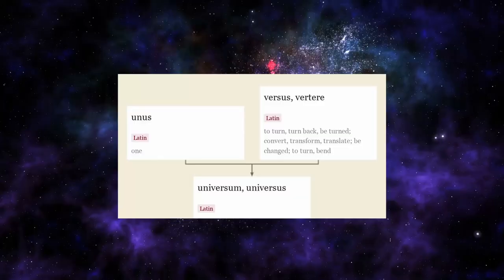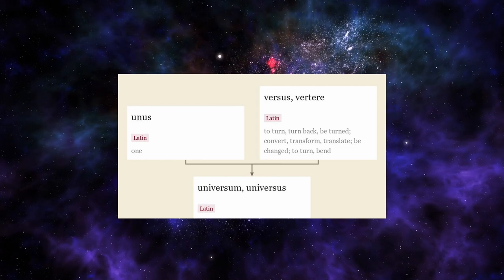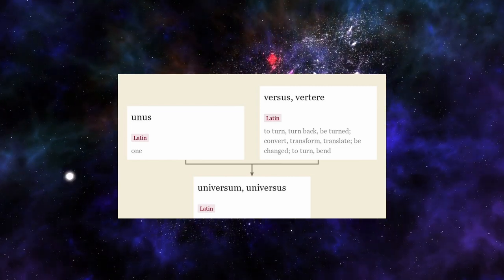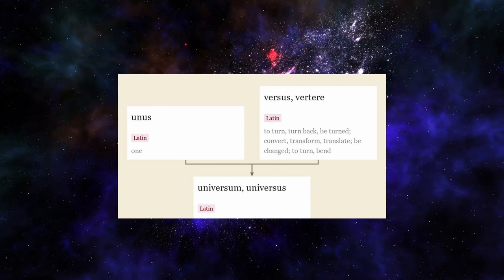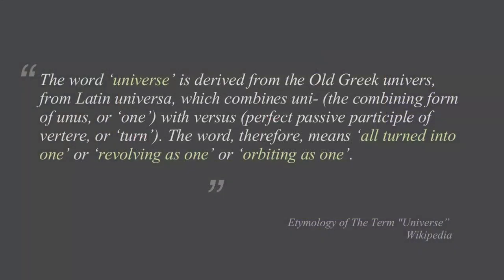When you start thinking about change in relationship to the universe, you start to realize that the word universe actually just means change. If you split the word universe into its two root words, you get the Latin words unus and vertere — unus means one, and vertere means to turn, to roll, or to change. So essentially, the word universe means one turning, one rotating, one changing.